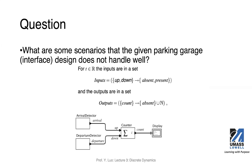The question is: what are the scenarios that this interface design does not handle well? As I mentioned earlier, this system may produce incorrect results because it does not capture all boundary conditions. So we'll have to improve the design in some way.